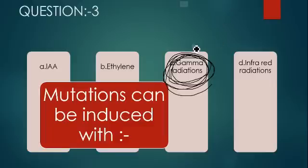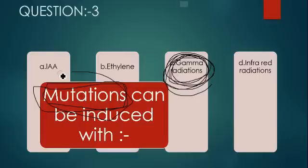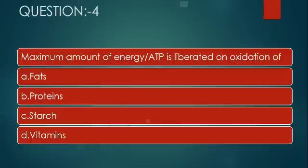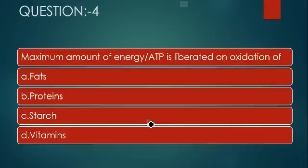Question number three: Mutation can be induced with — this is a very important question. The options are: option 1, IAA; option 2, ethylene; option 3, gamma radiation; and option 4, infrared radiation. I will tell you a trick about mutation.